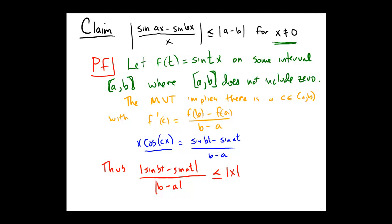Right? Because cosine was bounded above by 1. But now this effectively gives us what we want, because if we divide over by the absolute value of x and multiply up by the absolute value of b minus a, which we can do because x was non-zero, we end up with the final result.